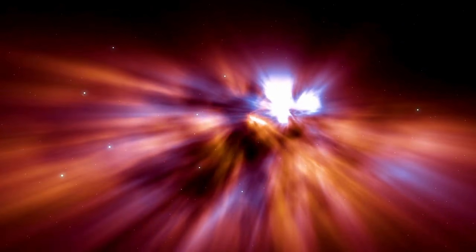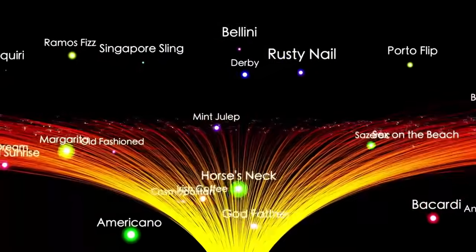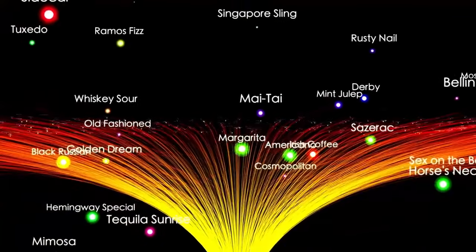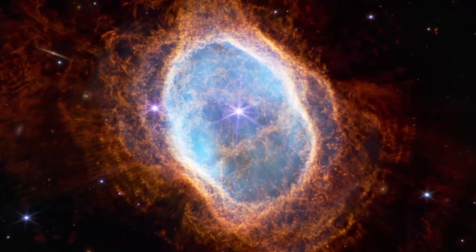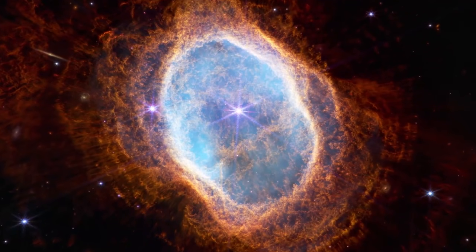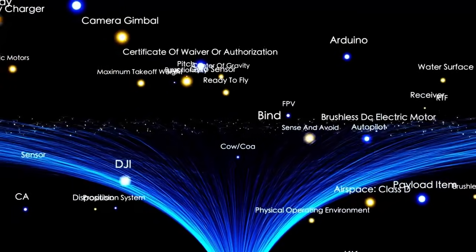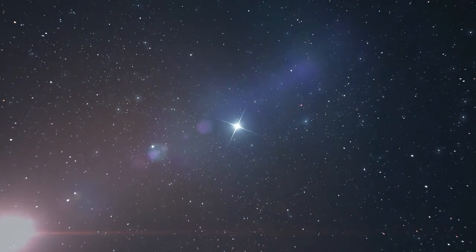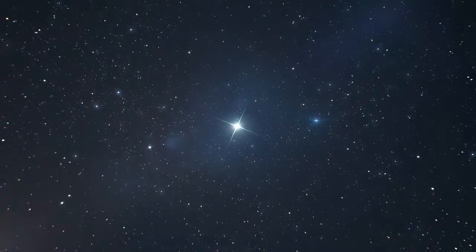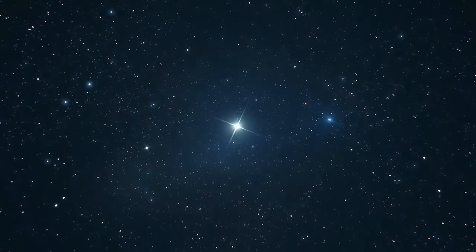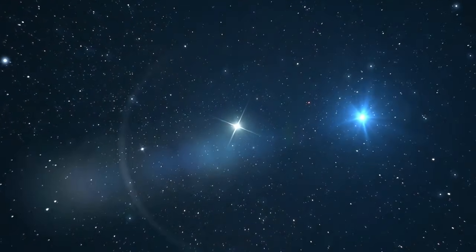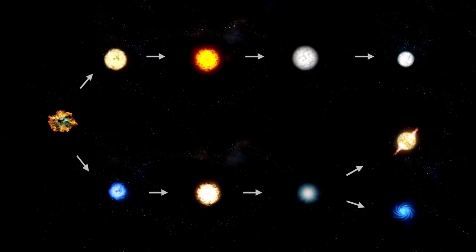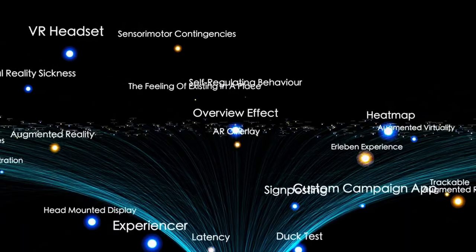All the available evidence strongly suggested that Betelgeuse had undergone an immense and unprecedented event known as a surface mass ejection, SME. This phenomenon bears similarities to coronal mass ejections, CMEs, observed on the sun. To better comprehend an SME, imagine a volcanic eruption on a scale matching that of a star. Material from a star's interior surges upwards and outwards, causing shock waves within its atmosphere. Over time, this material forms molecules and dust, partially obstructing our view of the star and causing it to appear dimmer.